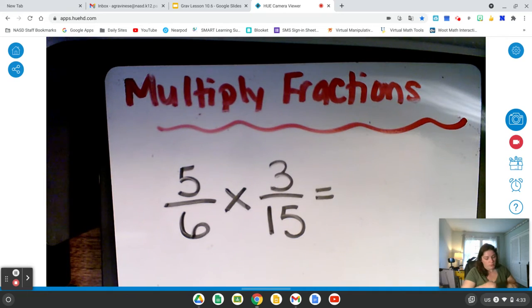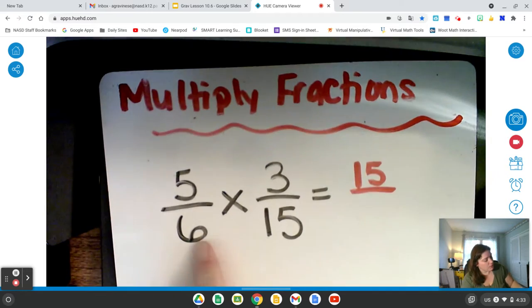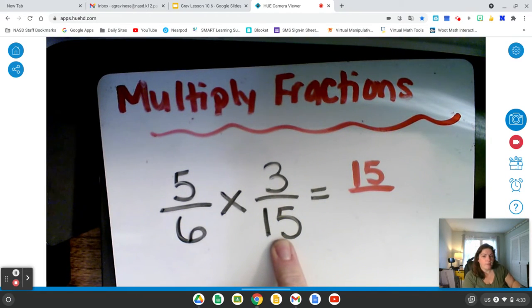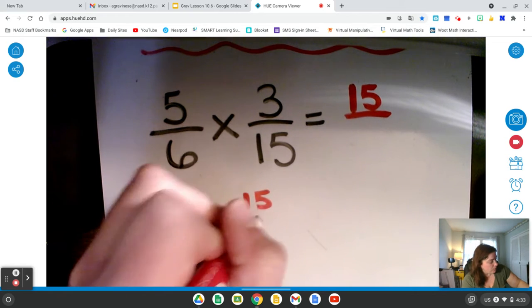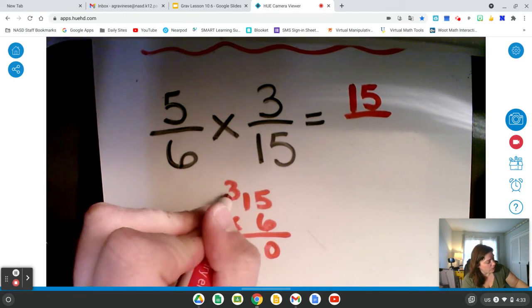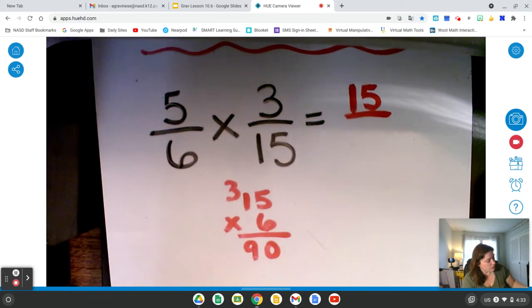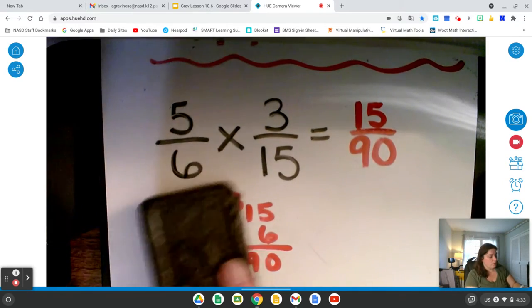5 times 3. 5 times 3 equals 15. 6 times 15. You may not know that. So, of course, you can do the math. 15 times 6. 5 times 6 is 30. 6 plus 3 is 9. So I get 15/90.